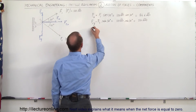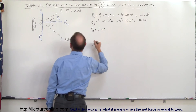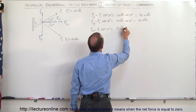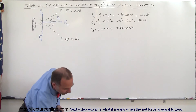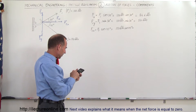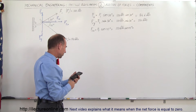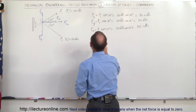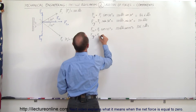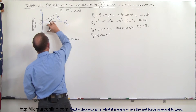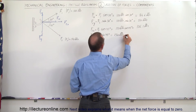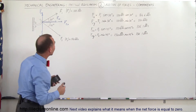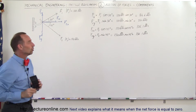We do the same for the second force. F2 in the X direction is equal to F2 times the cosine of 45 degrees, because it's the adjacent side to the angle. That's 150 pounds times cosine of 45 degrees, which is 0.707, so that's 106.1 pounds. F2 in the Y direction is equal to F2 times the sine of 45 degrees — the Y component would be opposite to the angle — and that would also be 106.1 pounds. Now, that force is pointing in the negative direction, but I'm only finding the magnitude so I don't have to worry about it yet.